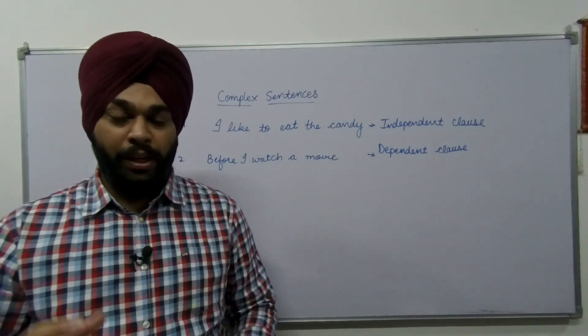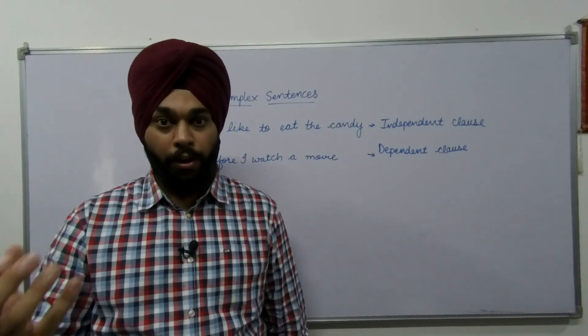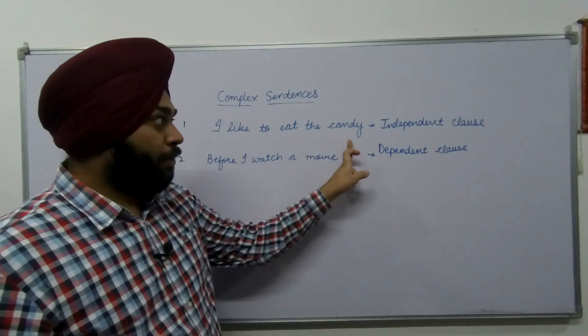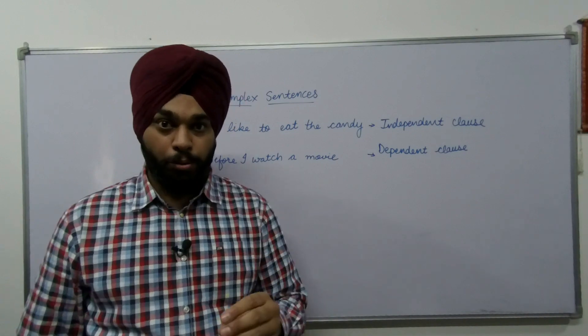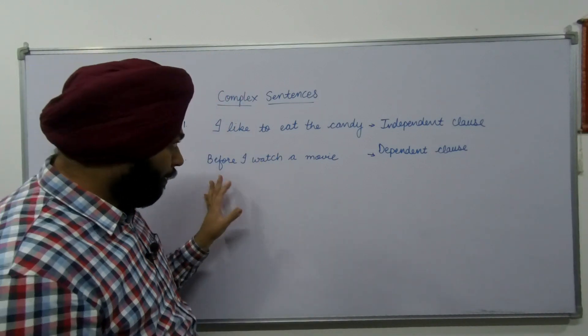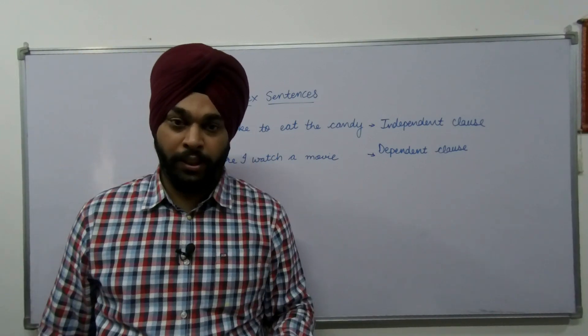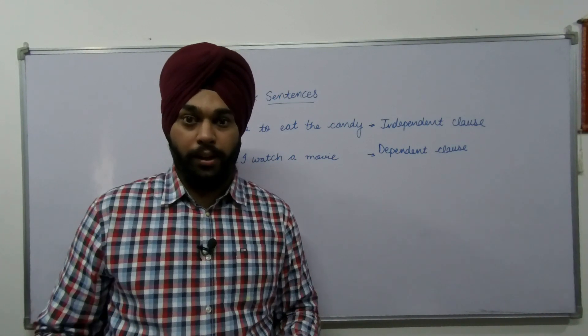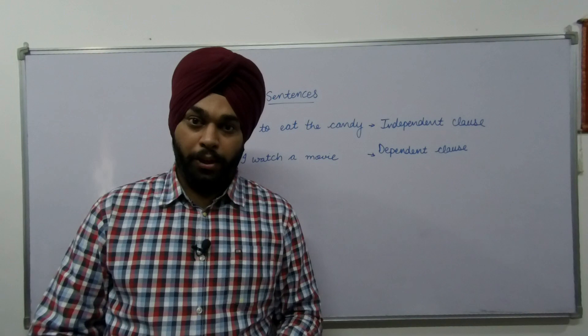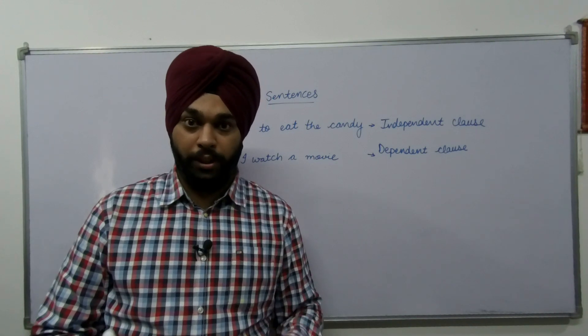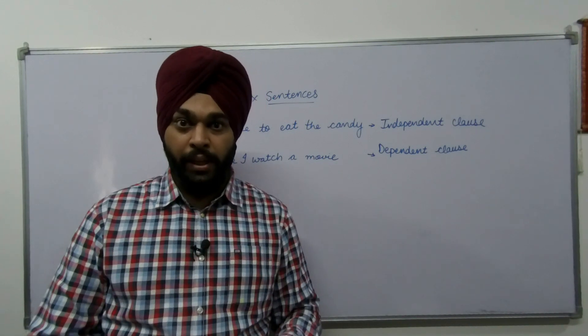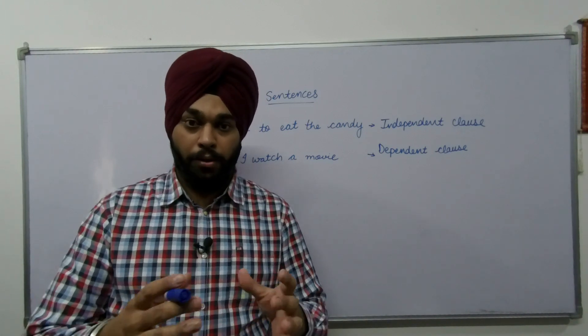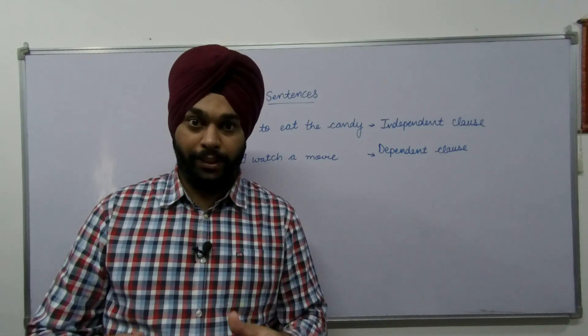The major reason why students are not able to get band in their speaking and writing is either they use only independent clauses or they use independent and separately dependent clauses. They are not able to make complex sentences. Until and unless you don't make complex sentences, you are not going to get good band score in your IELTS. I will show you right now how you can use different connectors to formulate complex sentences.